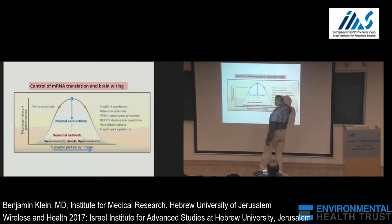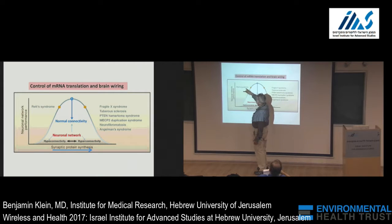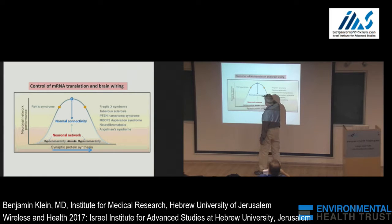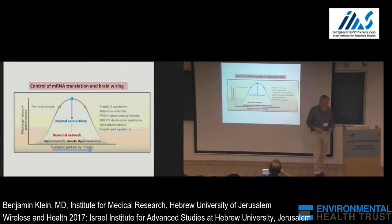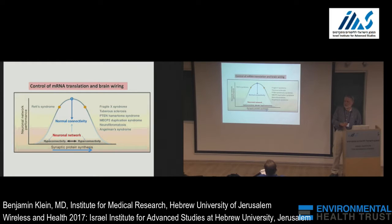This is more or less the scheme showing hyper-connectivity in these monogenic diseases. Rett syndrome is the only one that shows hypo-connectivity — normal would be in the middle. So the question is whether EMF in newborns can, at either stage, downregulate or kill neurons, or over-activate the growth of neurons.